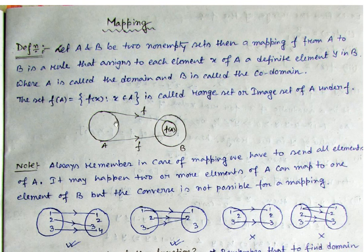For a mapping, the set A is known as the domain and B is called the co-domain. The set F(A), which is the image of all elements present in A, is known as the range set or the image set of A under the mapping F.